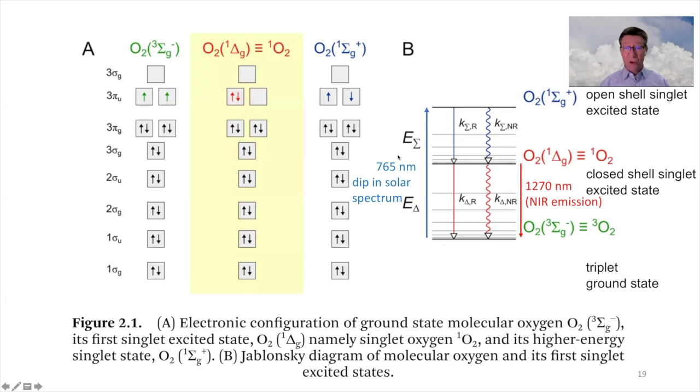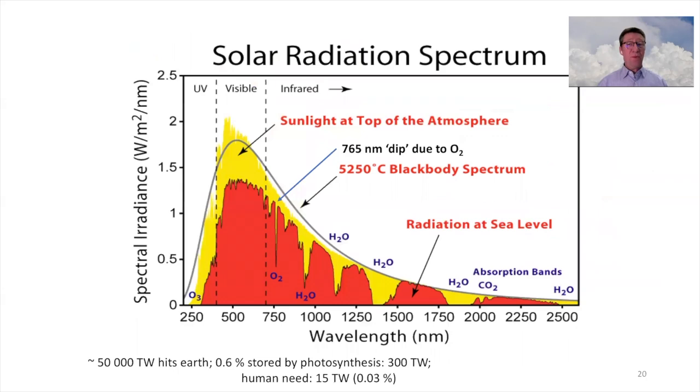It actually absorbs at 765 nanometer. How do we know this? Because there's actually a dip in the solar spectrum. If you have a look at the AM1.5 solar spectrum, you can see the absorption of molecular oxygen. So we are creating singlet oxygen in the atmosphere here.